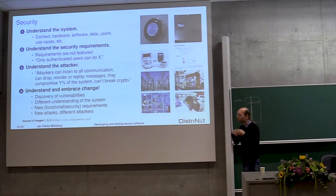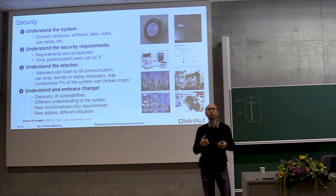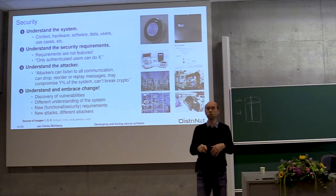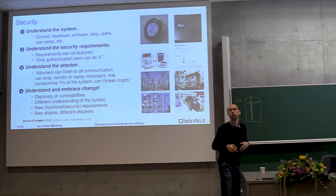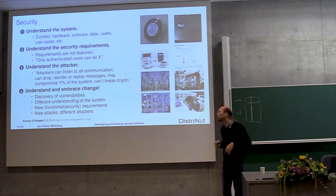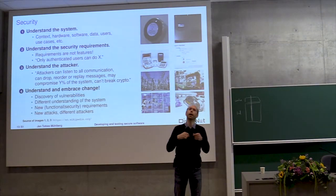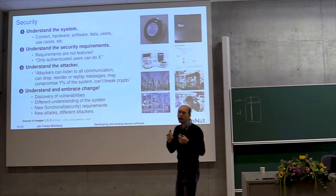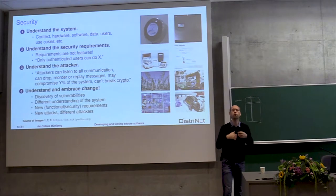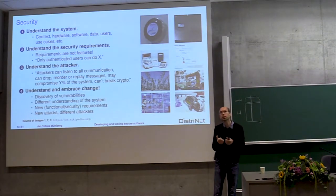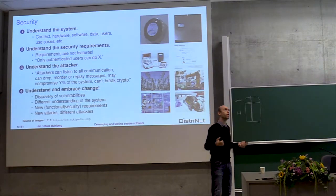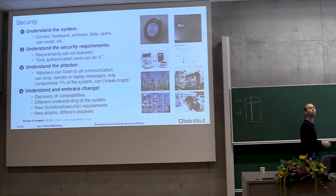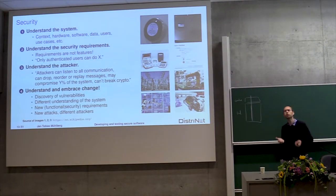What does it involve to do that? You have to understand your system, define your security requirements, do your threat modeling. You have to understand which attackers you're trying to protect against — some attackers you might decide it's infeasible to protect against. You have to embrace change: if a new attack comes along you have to understand its impact and hopefully devise mitigations. That's quite difficult, in particular if your system is huge. If you're trying to assess the impact of Meltdown/Spectre on an entire smart city, you'll probably be stuck.